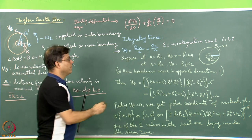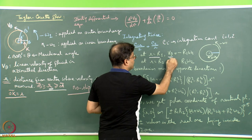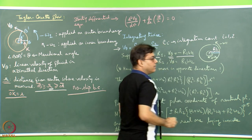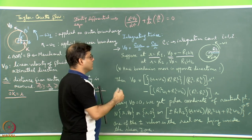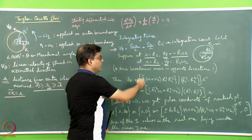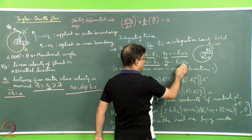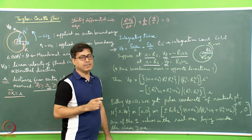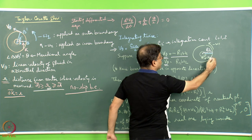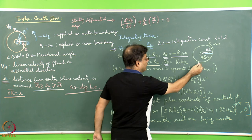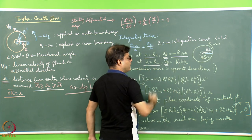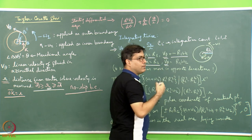We apply two boundary conditions. At r = r1, V theta = −r1·omega1, where r1 is the radius of the outer circle. At r = r2, V theta = r2·omega2. Note that minus omega 1 and plus omega 2 indicate opposite rotation senses — the outer circle rotates anti-clockwise and the inner circle rotates clockwise. If both moved in the same direction, we would assign the same sign to both.